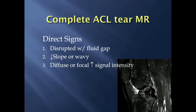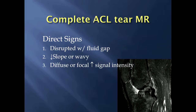Starting with a complete ACL tear, there are three direct signs you can see on MRI when making that diagnosis. The first is if the entire ACL is disrupted with a fluid gap within it. The second is where the entire ACL has a decreased slope or wavy appearance, and the third is where there is diffuse or focal increased signal intensity within the ACL.